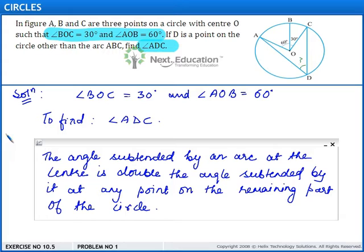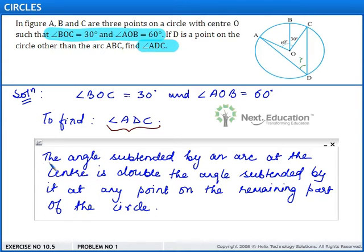To find the measure of angle ADC, we will use the theorem that says the angle subtended by an arc at the center is double the angle subtended by it at any point on the remaining part of the circle.